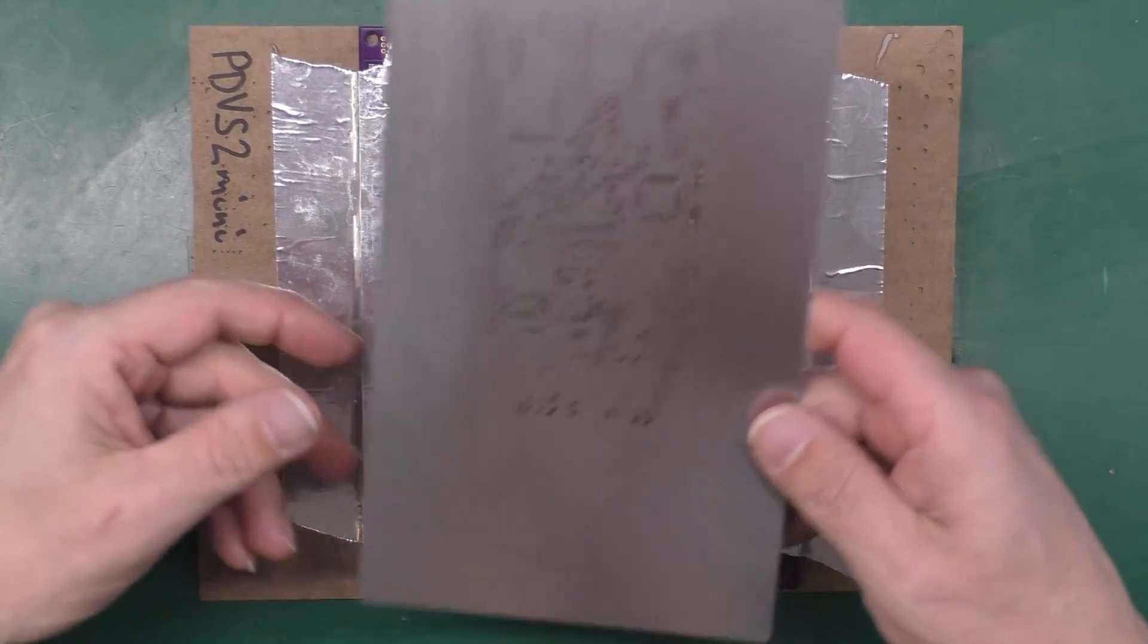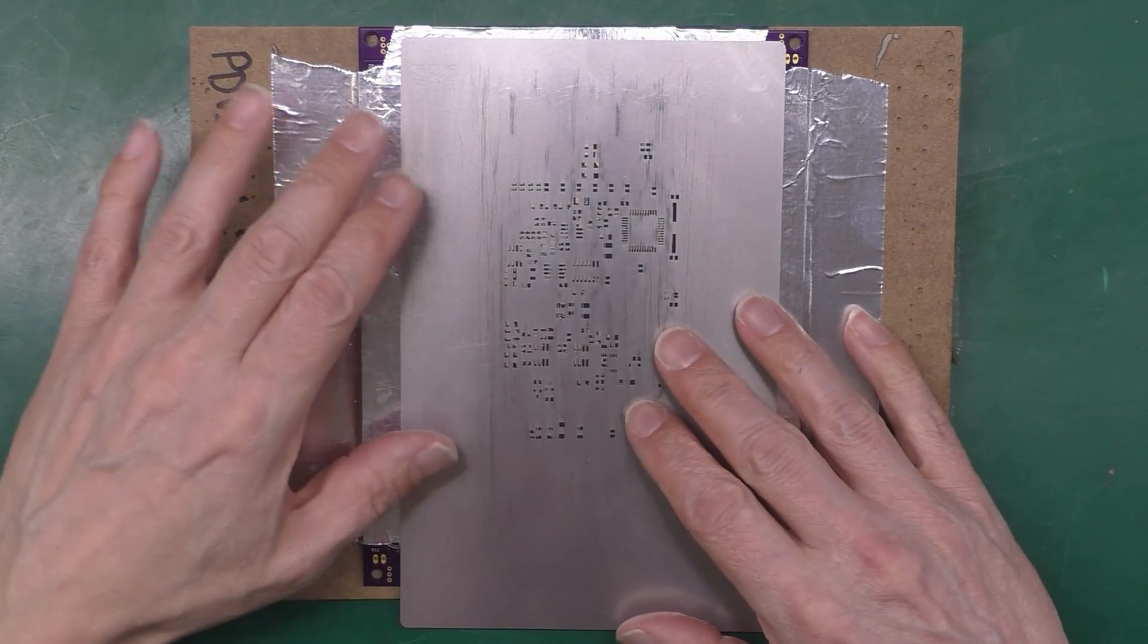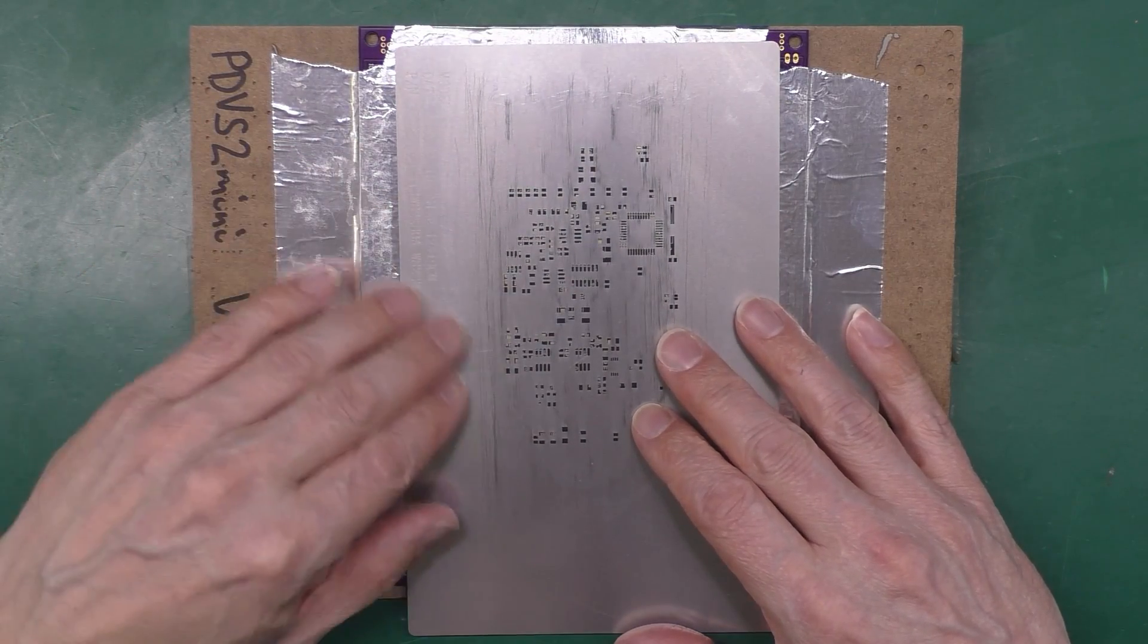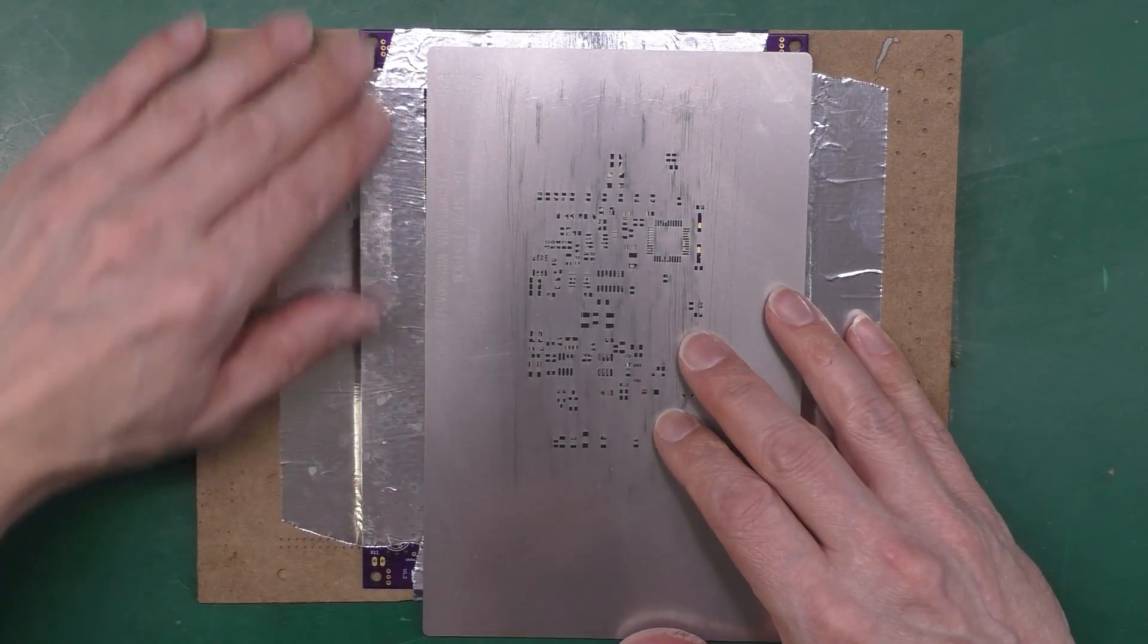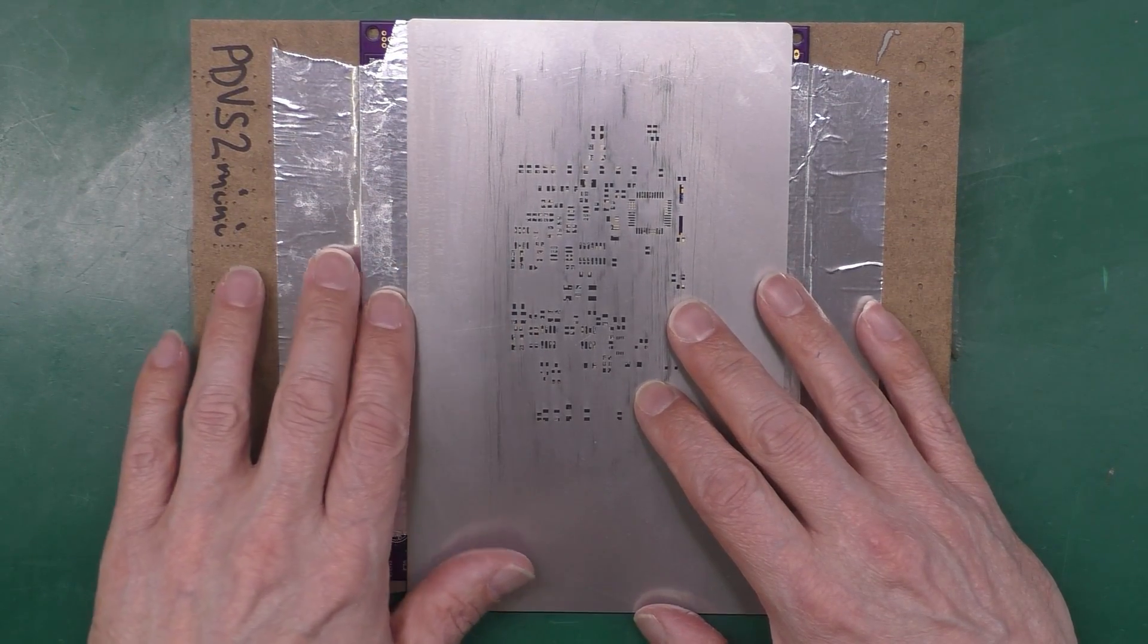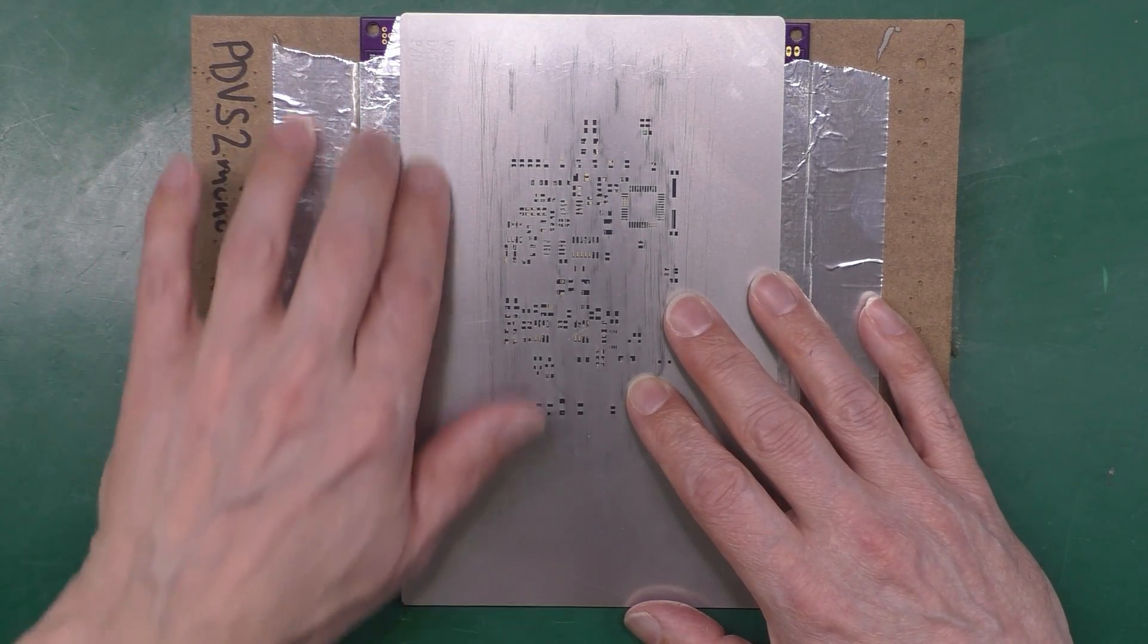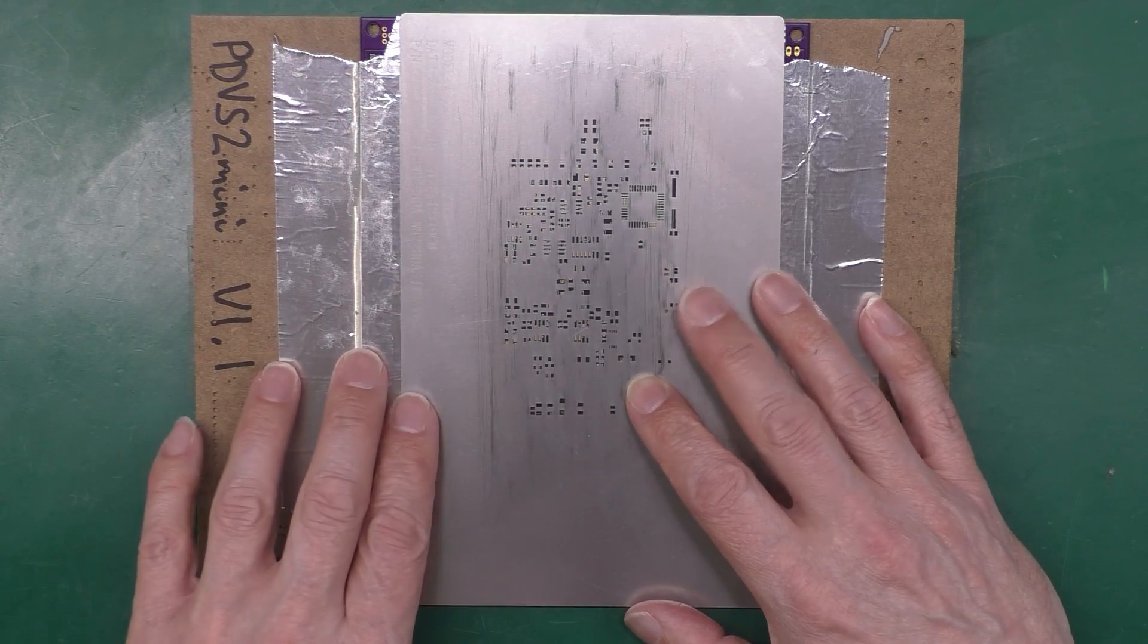The next thing you need to do is tape down the stencil on one edge only. You can see that my extended PCBs around the edge here extend out further than the width of the stencil. That's important so that I can have a nice strip of tape there that sits nice and flat.